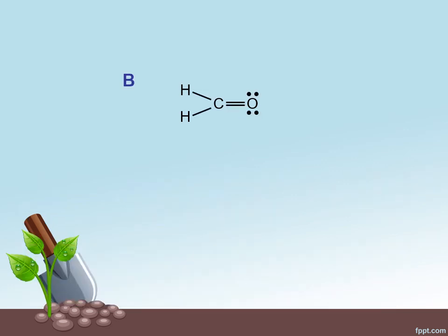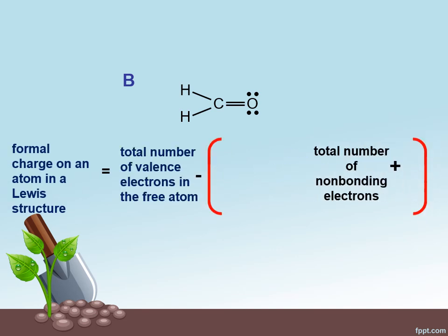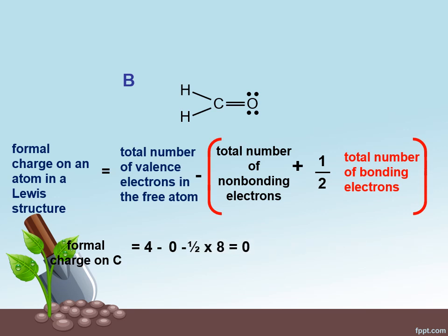Now let's calculate the formal charges on B. The valence electron of carbon as a free atom is four minus zero. Now we open the square bracket. So it becomes minus half of eight because there are four bonding pairs. The total is zero.